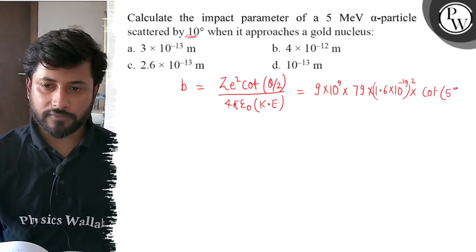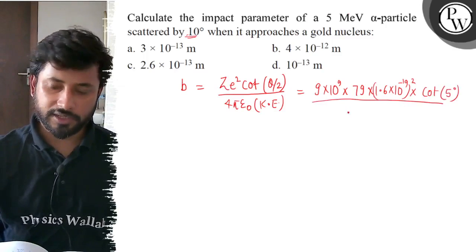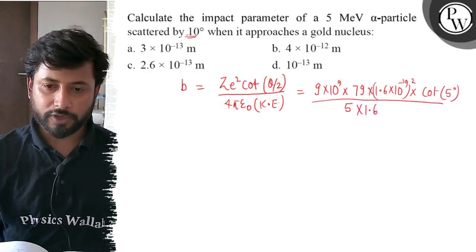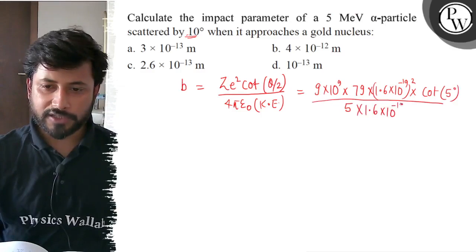So here we have cot 5 degrees divided by kinetic energy, and kinetic energy is 5 mega electron volt. So here we have 5 into 1.6 into 10 to the power minus 19.